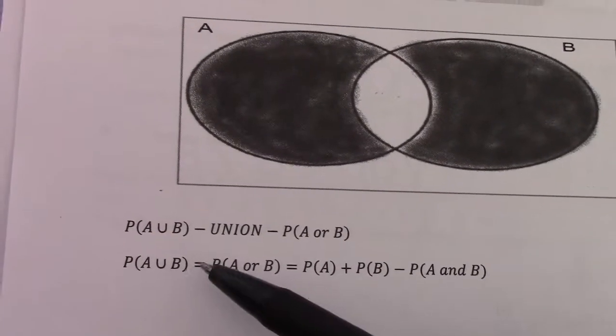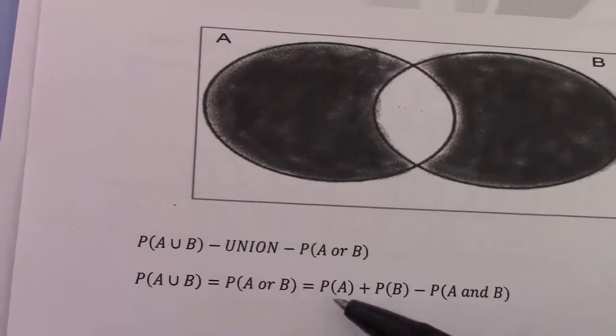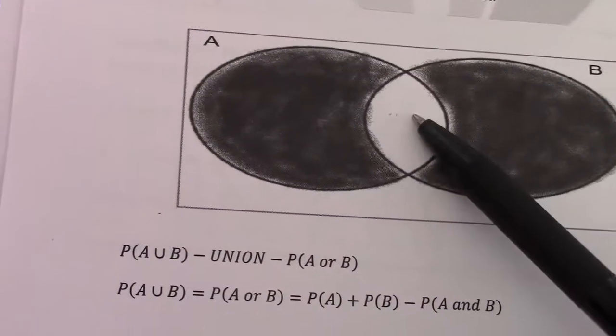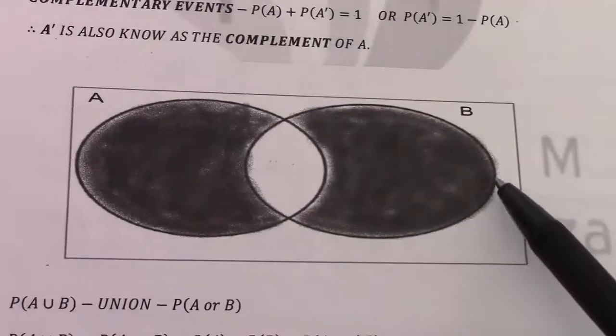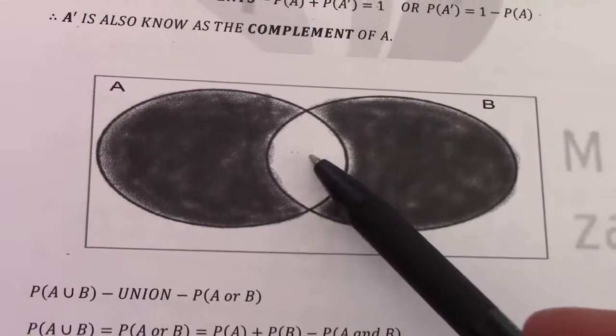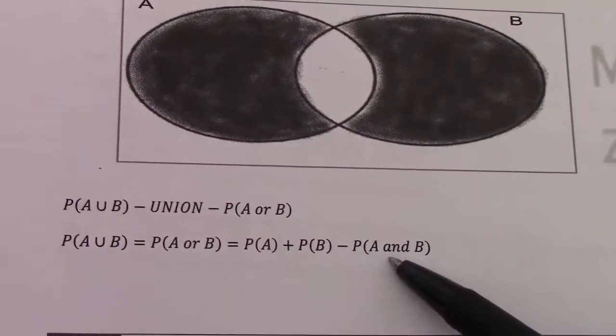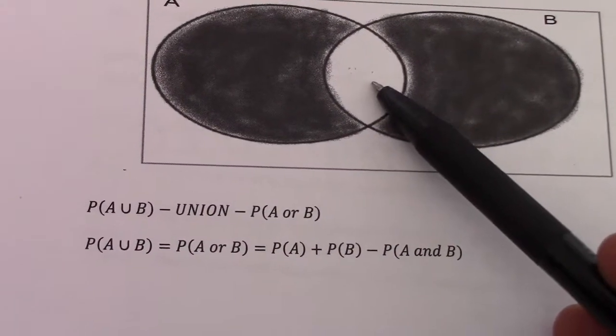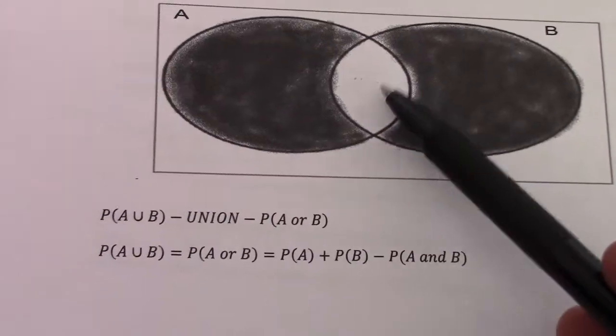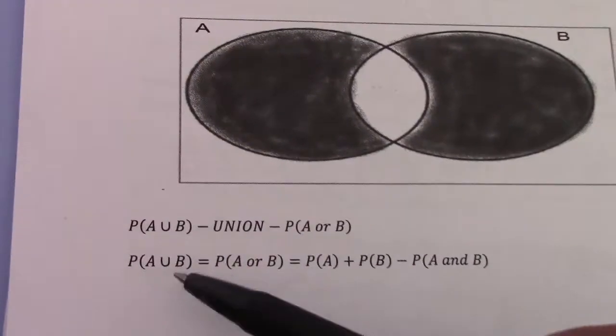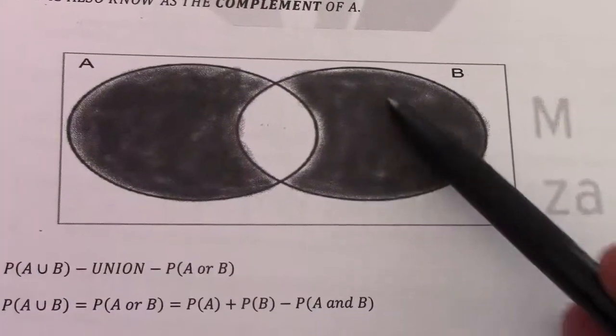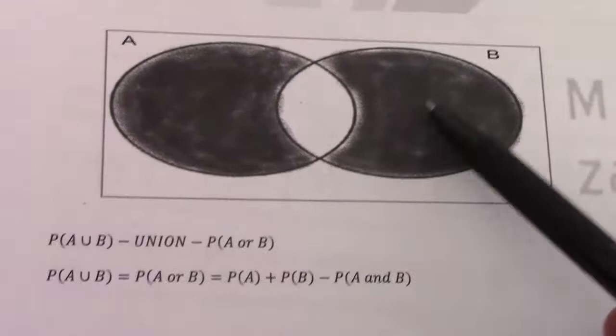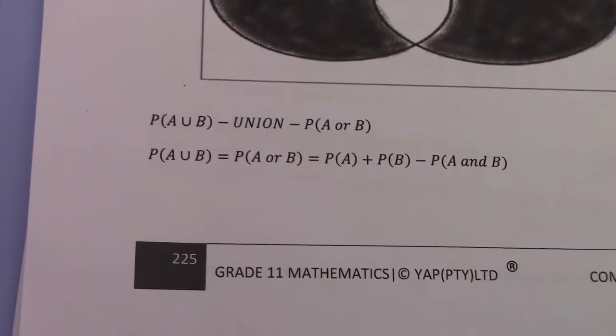Whenever we ask for probability of A union B, we would say probability of A, which includes this section here, and that's everything in A, plus the probability of B, which is everything in B including that section, minus the probability of A and B. So effectively, if I say probability of A or B, count everything in that shaded area for A, everything in that shaded region for B, and therefore you get A or B.